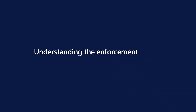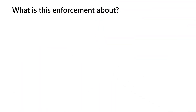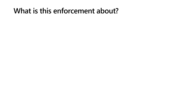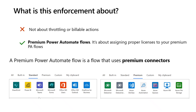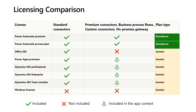Understanding the enforcement — what is this enforcement about? It's not about throttling or billable actions. It's about premium Power Automate flows — about assigning proper licenses to your premium PA flows. A premium Power Automate flow is a flow that uses premium connectors. Dataverse, Azure DevOps are some examples of premium connectors.